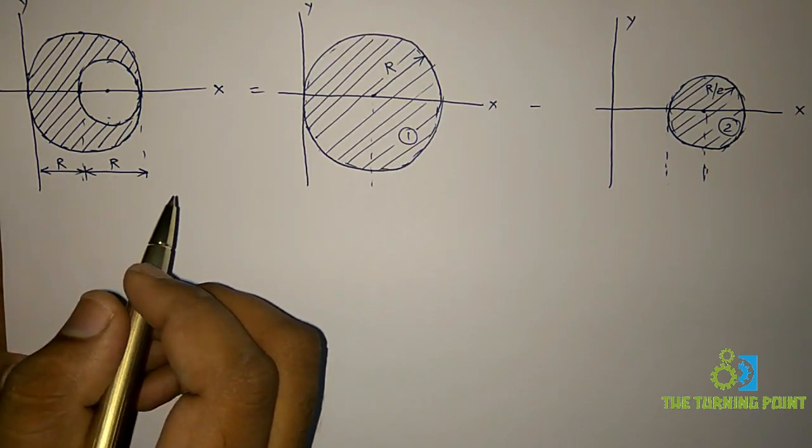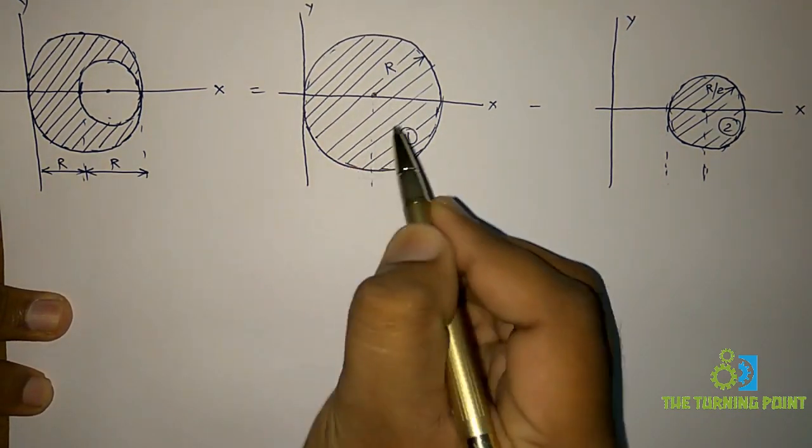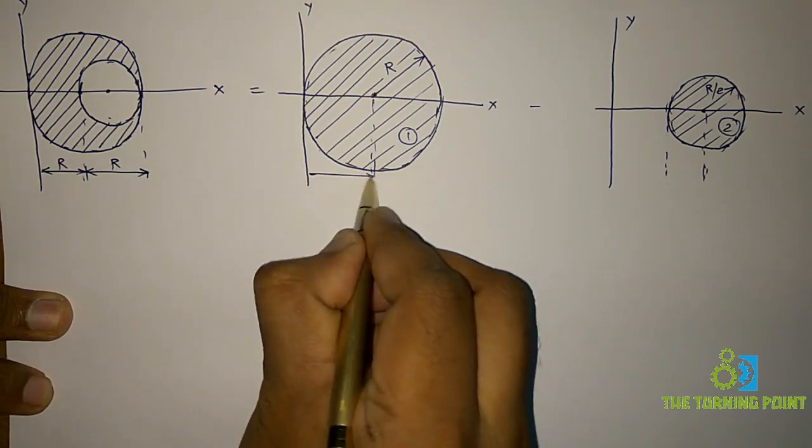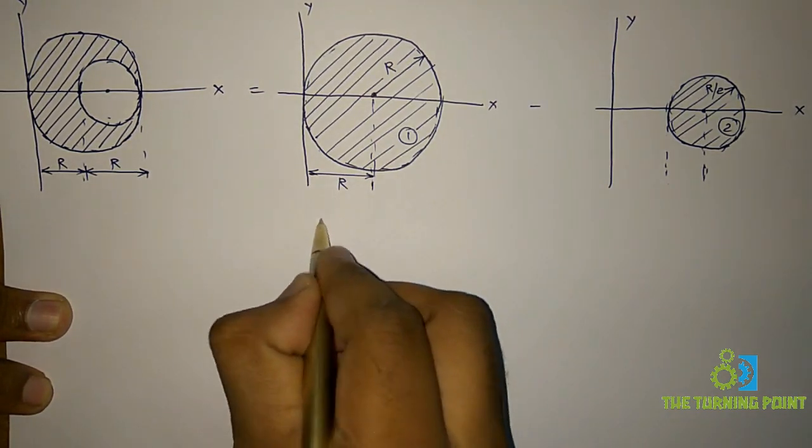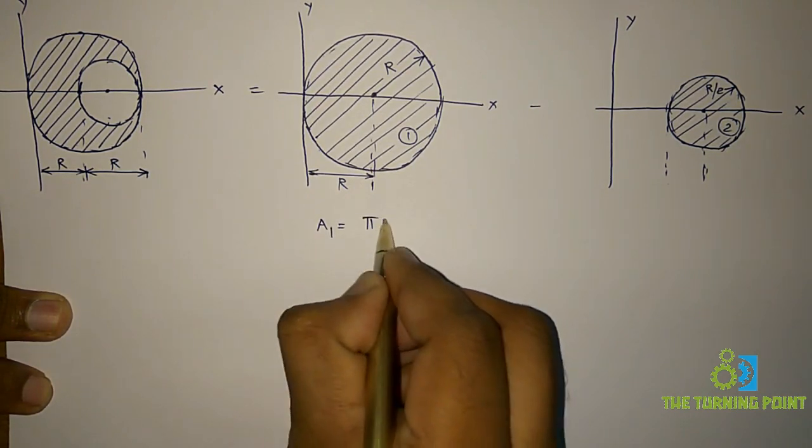First, let us calculate x-centroid coordinate. So here, this is the centroid for this one. And we know, so this is nothing but x-centroid radius. First, let us find the area. Area is equal to pi into r square.